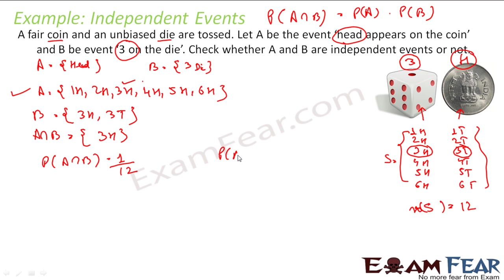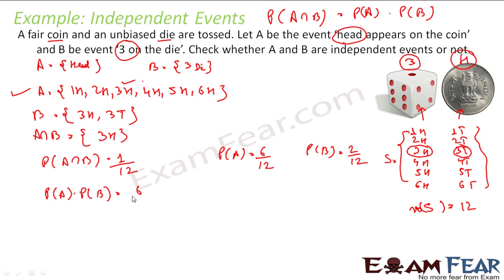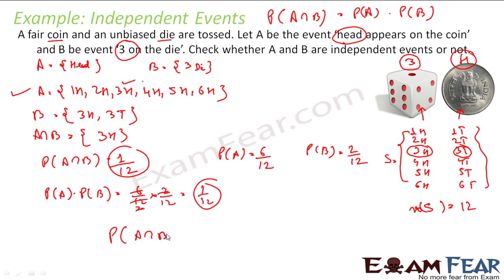P(A) = 6/12 since there are 6 elements in A. P(B) = 2/12 since there are 2 elements in B. So P(A) × P(B) = 6/12 × 2/12 = 1/12. Since P(A∩B) = P(A) × P(B) = 1/12, and this condition is true, we can say that A and B are independent events.